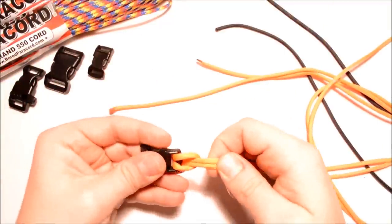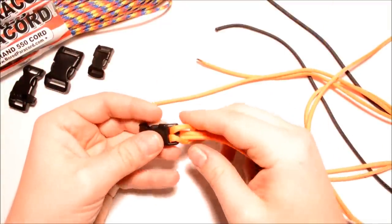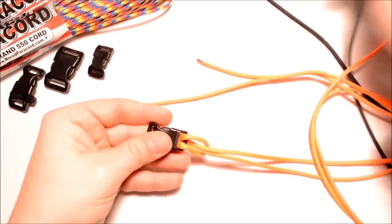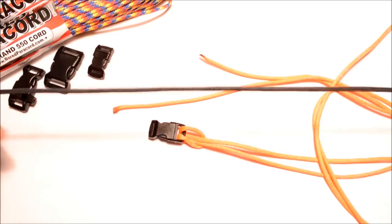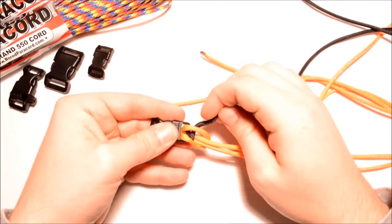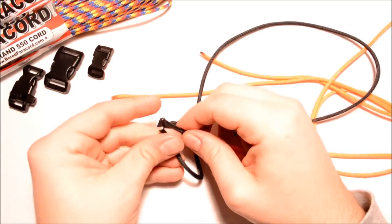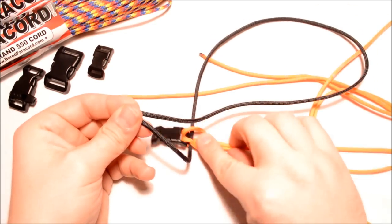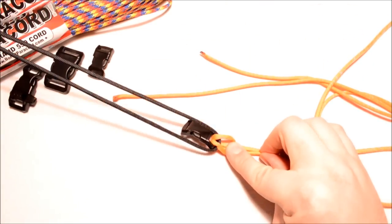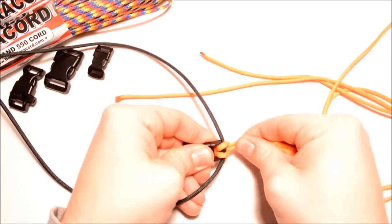What I've done here is I've got six feet of neon orange and I've already done the cow's hitch on one side of the bracelet. Now we're going to use black and I've got only about two feet of black here. We're going to put it through the cow's hitch and pull it through to the middle. So you can just grab both ends, hold that down and that's your middle point right there. Then you can tighten this up.